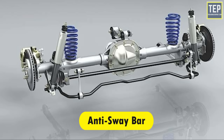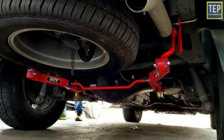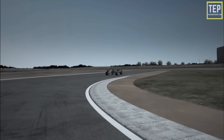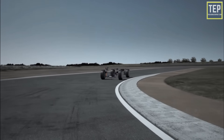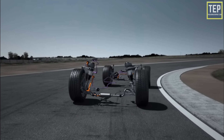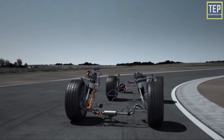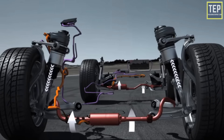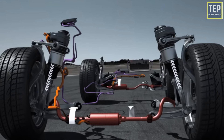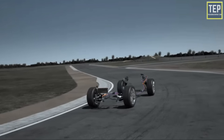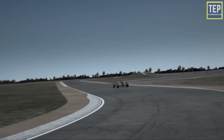Anti-sway bars, also known as anti-roll bars, play a key role in passenger comfort and vehicle stability. They act as one of the key components in a vehicle suspension system. As the name suggests, their purpose is to reduce body roll or sway when operating under cornering conditions.